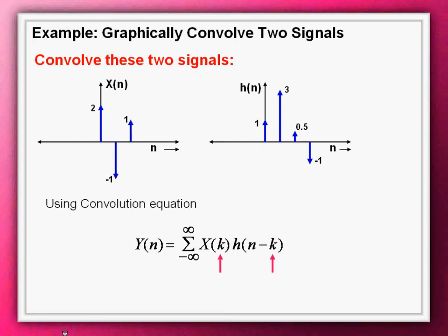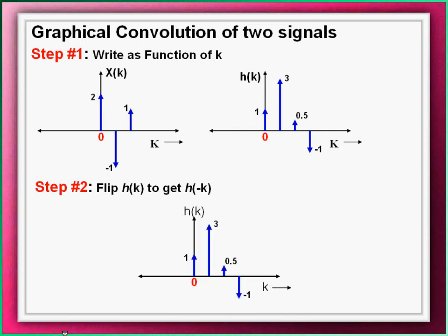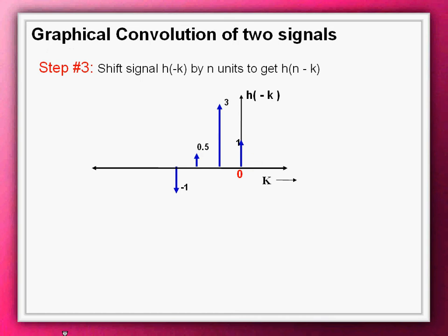As seen in the convolution equation, the first step is to transform the signals x[n] and h[n] in terms of k — that is, obtain x[k] and h[k]. We also need to generate a shifted impulse response h[n minus k]. Step one is to transform the given signals as a function of k. Step two is to flip one of the signals — let's flip h[k] and obtain h[n minus k].